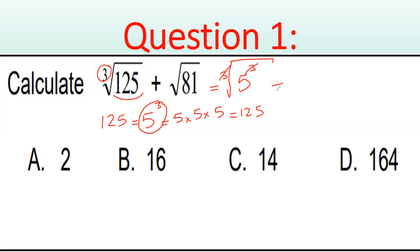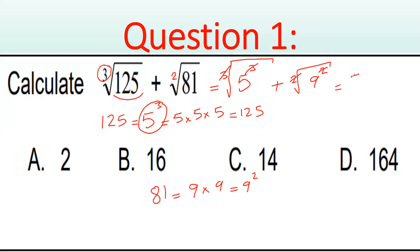Next, we have the square root of 81. If there is no number on the root sign, it means it's a square root — power of two. So we need 81 as a power of two. 81 is nine times nine, so we write 9². The square root and the power of two cancel each other, leaving nine. So five plus nine gives us 14. The answer is C.